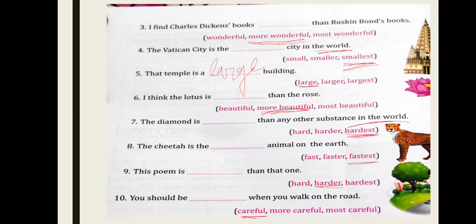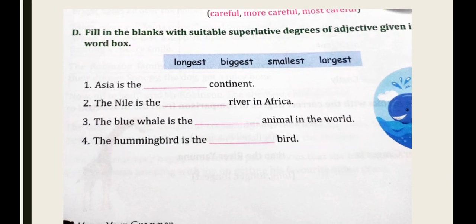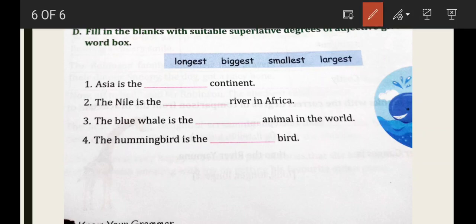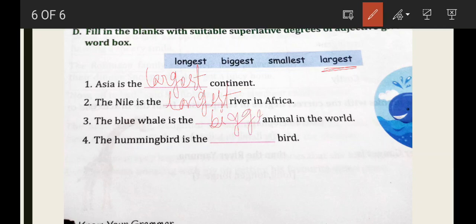Take a screenshot. Okay, take a screenshot. Next is, Asia is the largest continent. The Nile is the longest river. The blue whale is the biggest animal, and the hummingbird is the smallest.